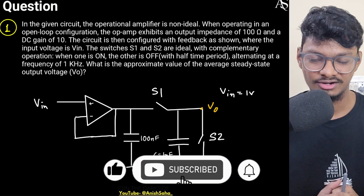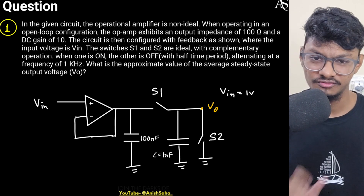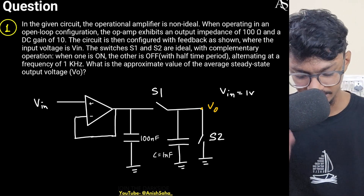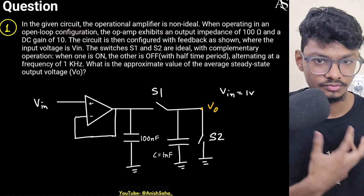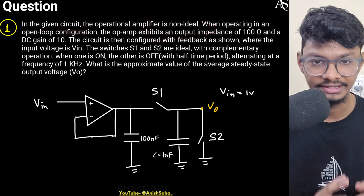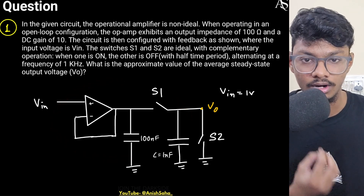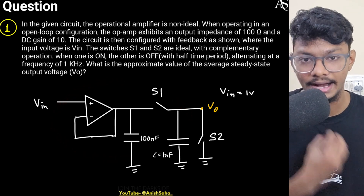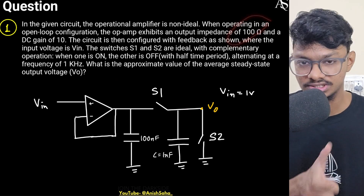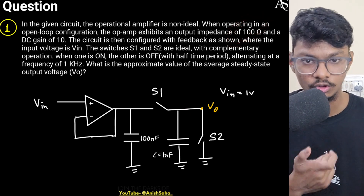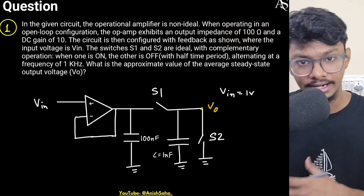Hey everyone, welcome back to my channel. I am Anish and today we will start with an interesting question on practical op-amps. The operational amplifier in the given circuit is non-ideal, so you have to be very careful with the circuit and understand how to draw the model of a non-ideal op-amp. Check what the specs are, and if some spec is not mentioned, you can assume it to be ideal.